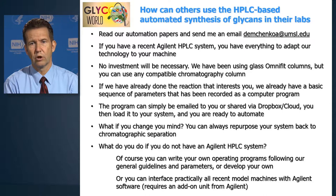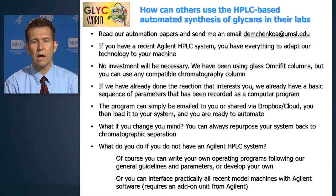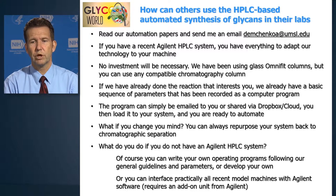How can you use this technology? I would recommend starting by reading our papers and maybe sending me an email for further information — the address is demchenkoa at umsl.edu. If you use an HPLC made by Agilent, you have everything needed to adapt our platform to your own needs. You don't need to add additional components — you can use what you have. We use glass columns, but you can use any chromatography column available in your lab. If you want to make a sequence that we've already made, it's very likely that we have a program ready for you, and you can also write your own programs. The program can be shared as a small file by email or Dropbox.